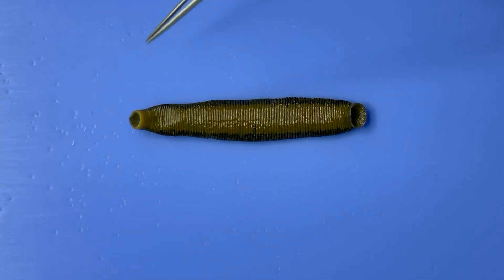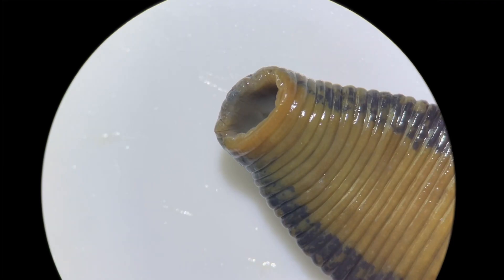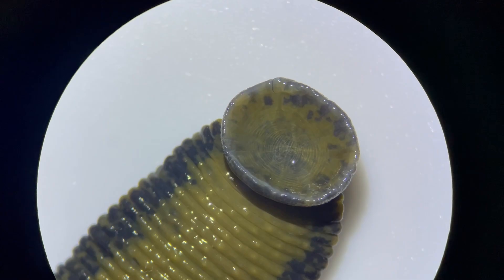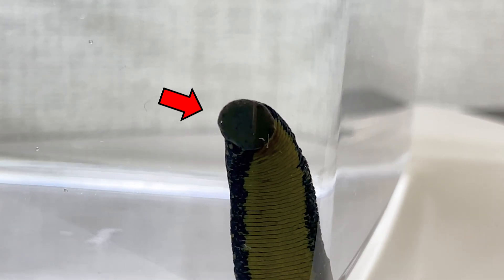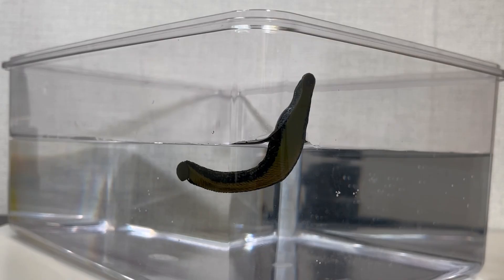When you flip the leech over, the thinner part is the head, while the broader part is the tail. Under the microscope, if you zoom in, this is the head part, and the tail end is the sucker. The leech attaches itself using the suckers on both sides.